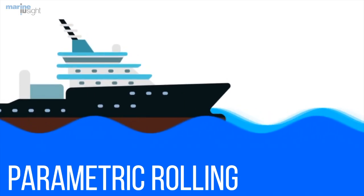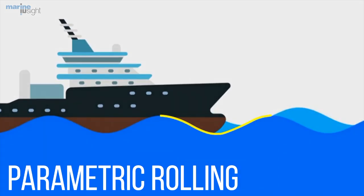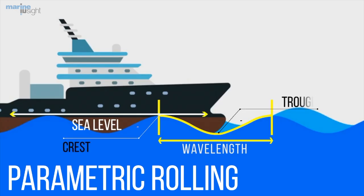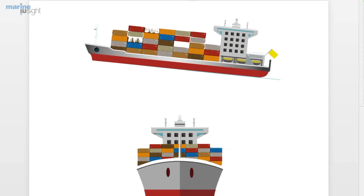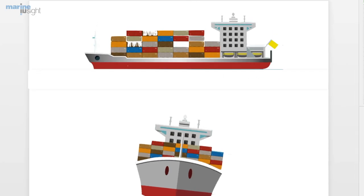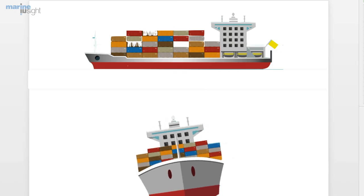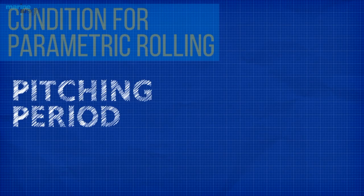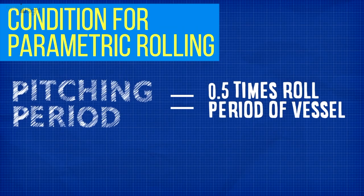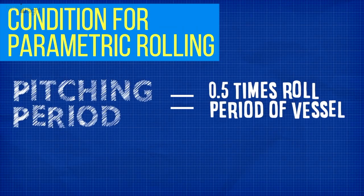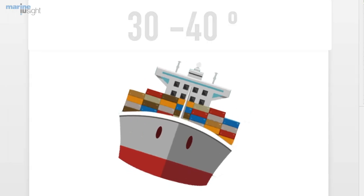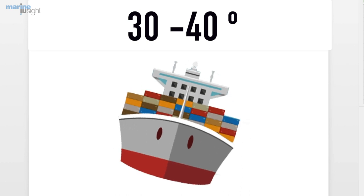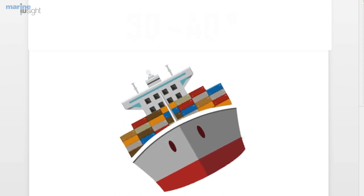The wavelength reduces and the encounter period of waves by the ship also reduces. This results in a decrease in the ship's speed and an increase in the pitching angle along with rolling of the ship, where the pitching period is equal to or half of that of the time taken to complete one roll. This leads to heavy rolling of the vessel, which can be up to 30 to 40 degrees on both sides.